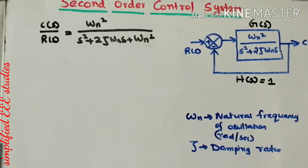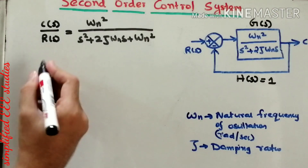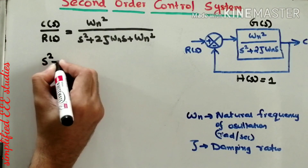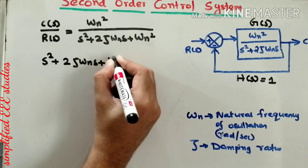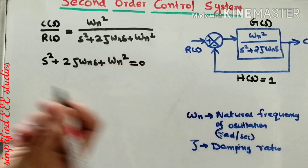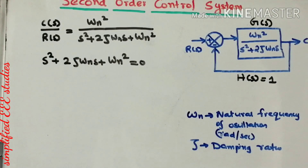Now I would like to calculate the roots of the characteristic equation. The characteristic equation is s² plus 2ζωn·s plus ωn² equals 0, obtained by equating the denominator polynomial to zero. This is a quadratic equation, so we apply the quadratic formula to find the roots.